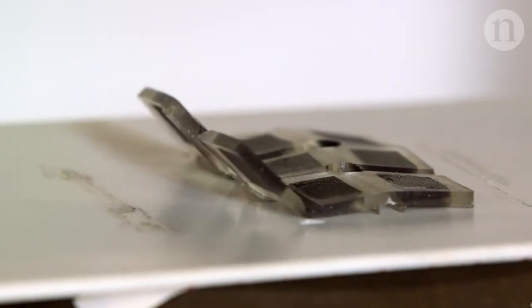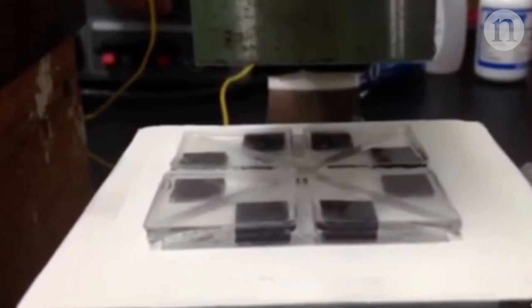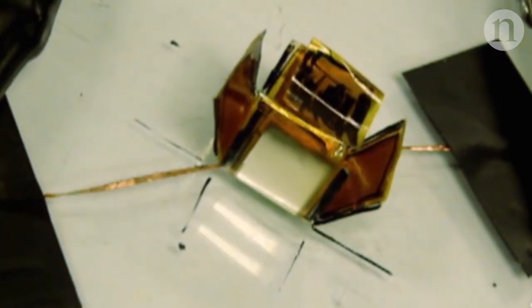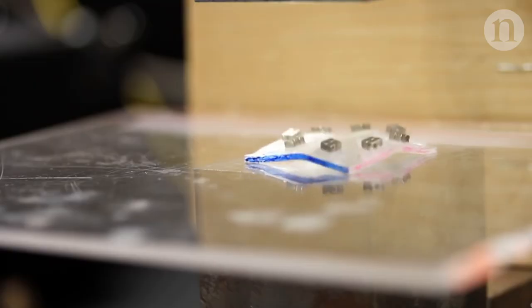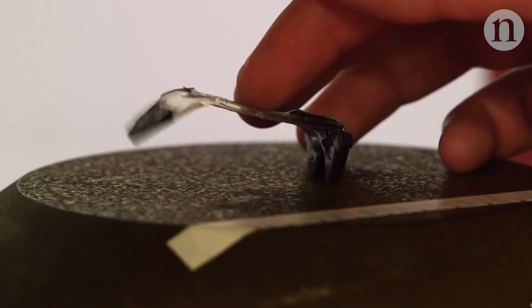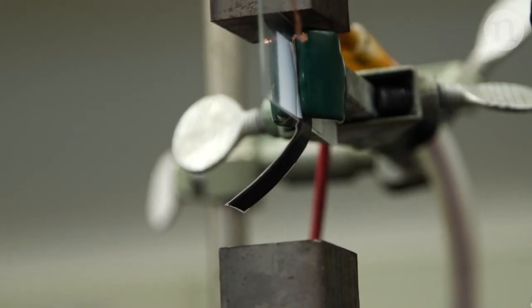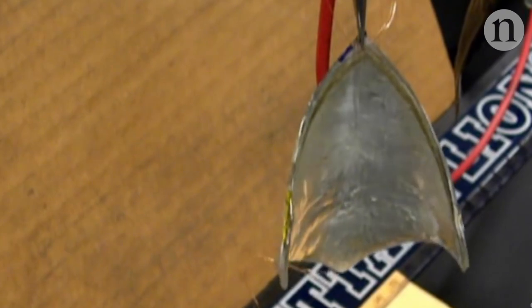For decades, scientists have been working on materials that can change shape. Whether it's bending, contracting or wriggling along, these kinds of smart materials could be useful for robotics, engineering and medicine.